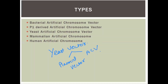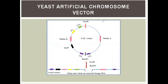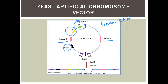The YAC plasmid vector contains linear DNA with an origin of replication, two selectable markers including ampicillin resistance, a centromeric region, and telomeric regions present at both ends.